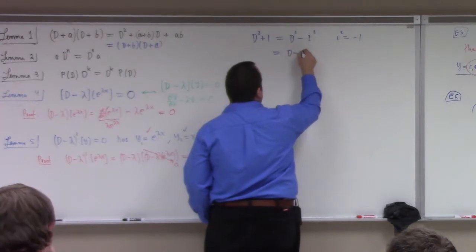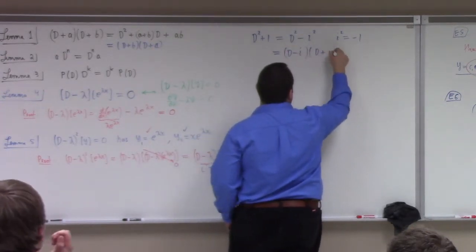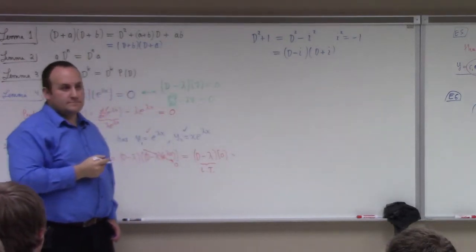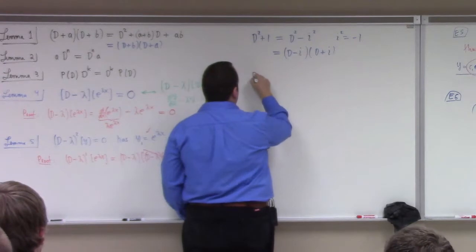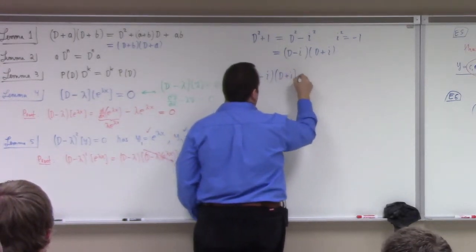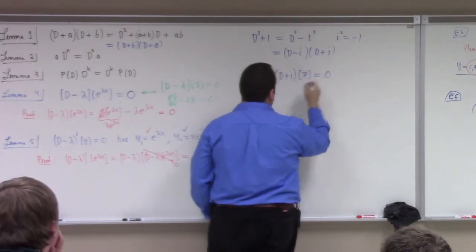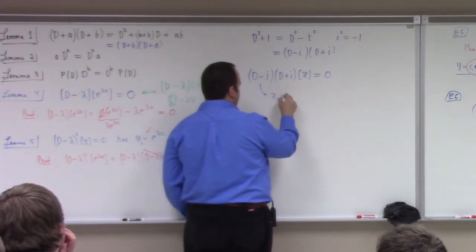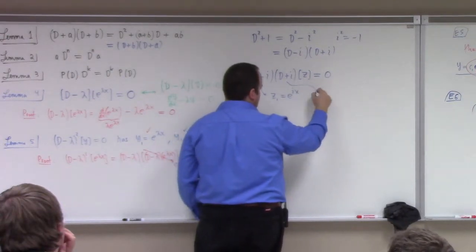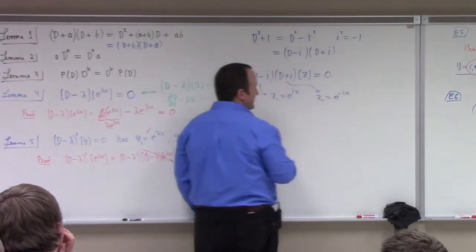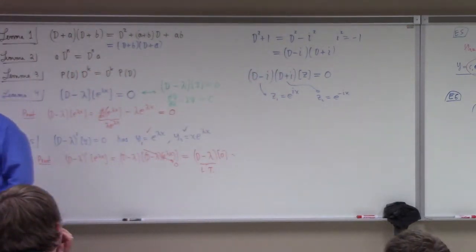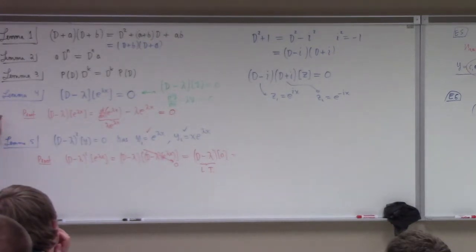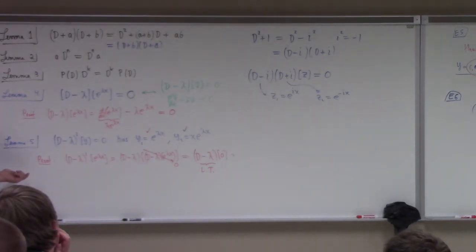So D² + 1 factors as (D − i)(D + i). If I ask you to solve (D − i)(D + i) acting on z equals zero, the solutions include z1 = e^(ix) and z2 = e^(−ix). You might have assumed lambda was real — I never said that. I said lambda was a constant. These lemmas are also true for lambda being complex, which is why we computed last class that the derivative of e^(λx) is λ·e^(λx) for lambda being complex.